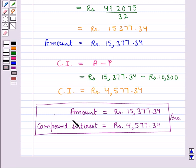So this is the final answer. Amount is equal to Rs. 15,377.34 and compound interest is equal to Rs. 4,577.34.